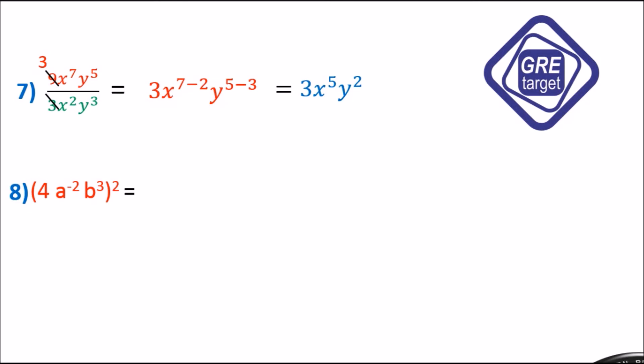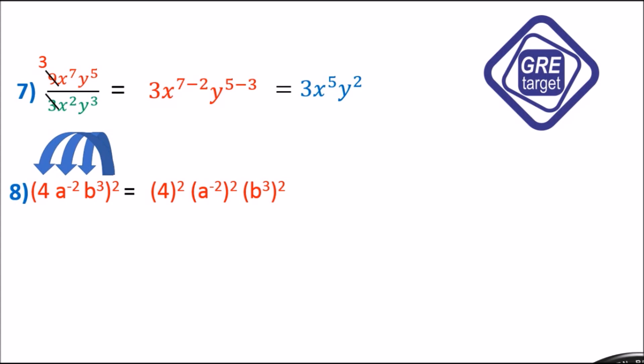Example 8: 4 times a raised to minus 2 times b cubed, the whole squared. We apply the expanded power rule, multiplying each term by 2. So 4 squared equals 16; a raised to minus 2 times 2 equals a raised to minus 4 by the power rule; b cubed raised to 2 equals b raised to 6. The answer is 16 times b raised to 6 divided by a raised to 4.